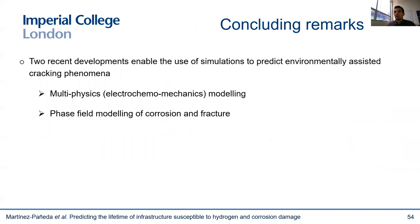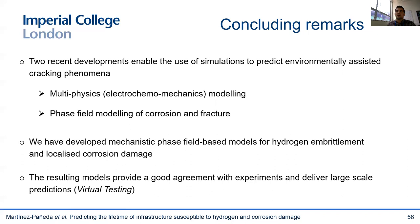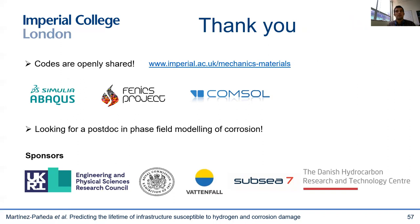I will just conclude with a few remarks. There is an opportunity now to bring computer simulations to the prediction of environmental assisted cracking phenomena such as stress corrosion cracking, hydrogen embrittlement, or corrosion fatigue. This is mainly because of two recent developments: the possibility of modeling coupled physical phenomena and the surge in phase field methods to track evolving interfaces such as corrosion pits or cracks. We have shown for hydrogen embrittlement and localized corrosion that these powerful computational tools can resolve the underlying physics and provide a mechanistic modeling framework. And what I find very exciting is that these models deliver very good agreement with experiments and can be used to model practical cases, effectively conducting virtual testing on civil engineering infrastructure exposed to harmful environments.